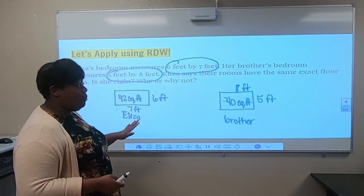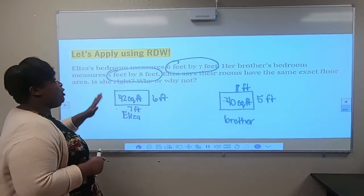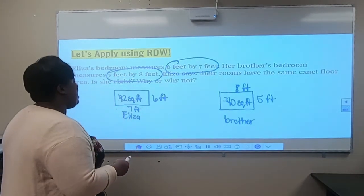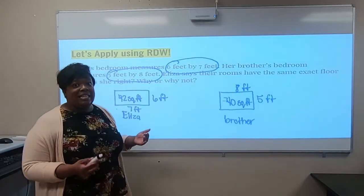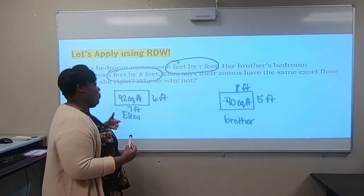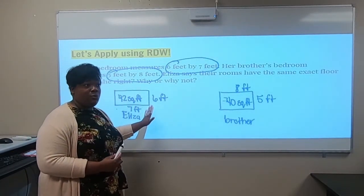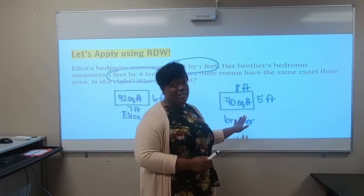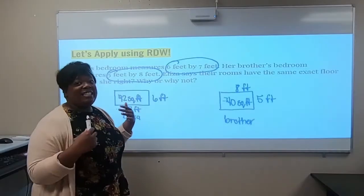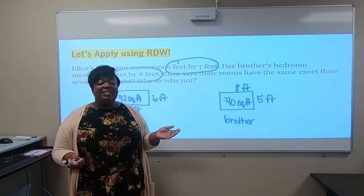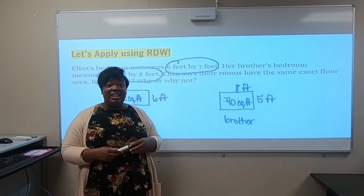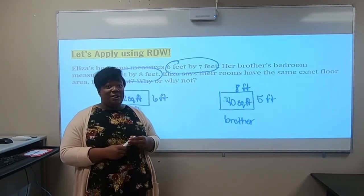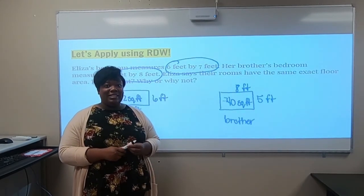Eliza is incorrect. When we write our sentence, we say: Eliza is incorrect because her floor area is forty-two square feet and her brother's floor area is forty square feet. That's all I have for you today. I hope you enjoyed my area lesson part two, and I'll come back with another lesson on polygons. Bye!